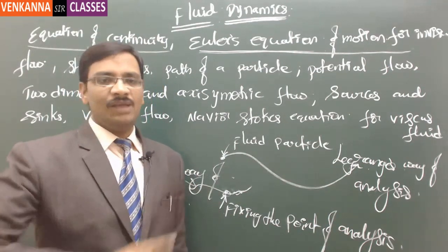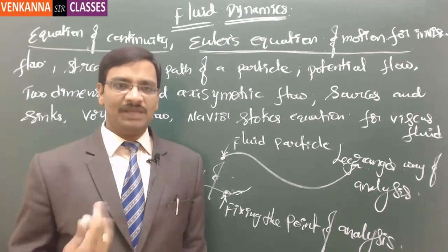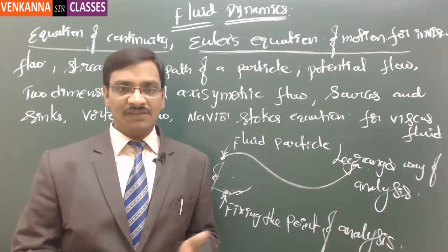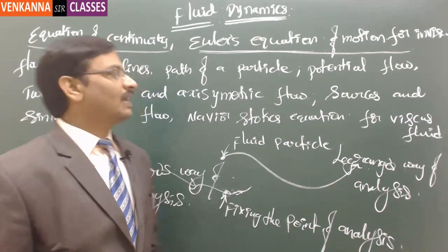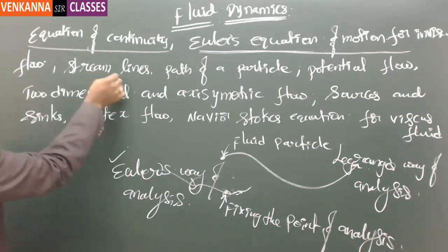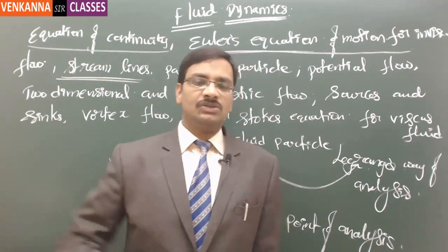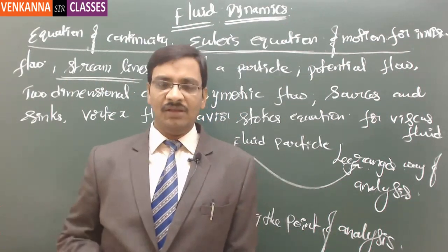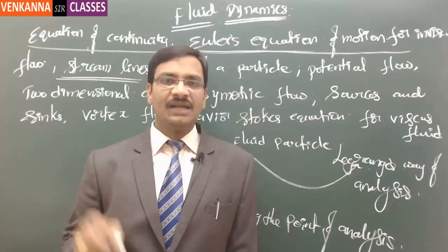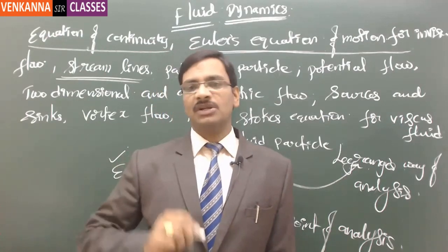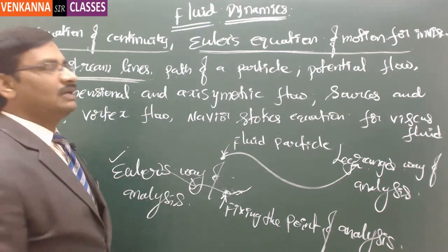The continuity equation is proven mathematically for a fluid using the Gauss divergence theorem. Gauss divergence represents the expandability — diverging nature — which is zero as long as the fluid is incompressible. Then, streamlines: the path of a particle where, if you draw a tangent to the velocity at any instant, that tangent direction is the streamline flow at that particular point.